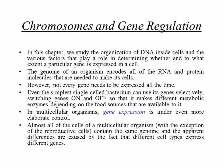In this chapter, we study the organization of DNA inside cells and the various factors that play a role in determining whether and to what extent a particular gene is going to be expressed in a cell. The process of copying from DNA to RNA is called transcription, and the corresponding gene is said to be expressed. The genome is a collection of DNA in the nucleus that encodes all the RNA and protein molecules needed to make the organism.